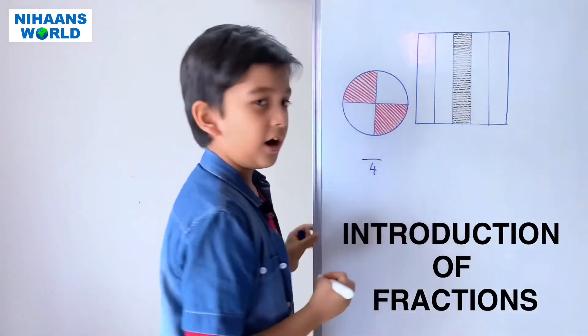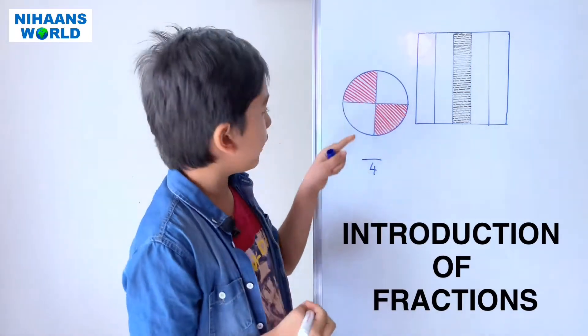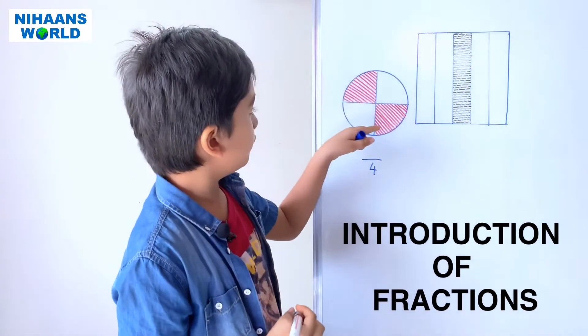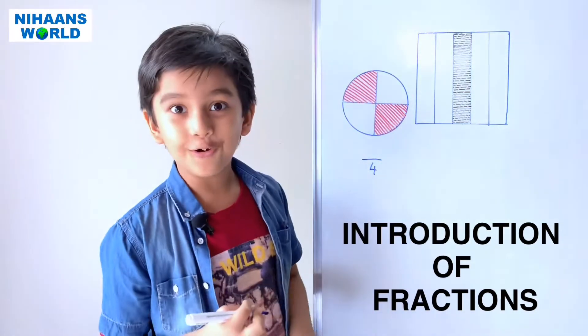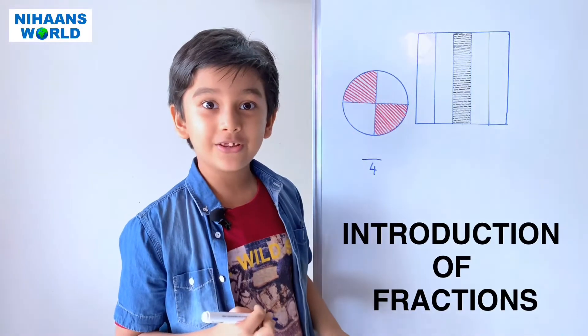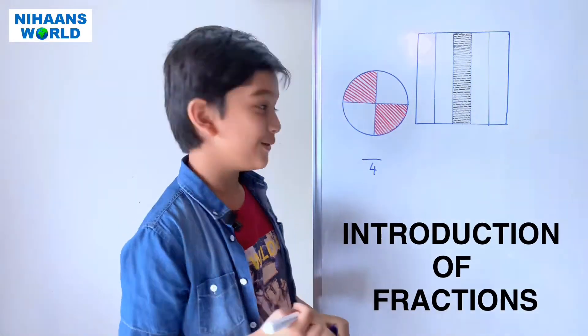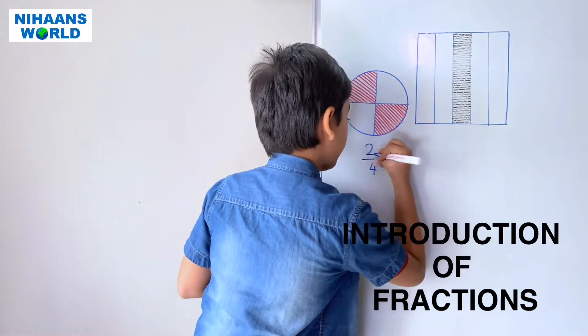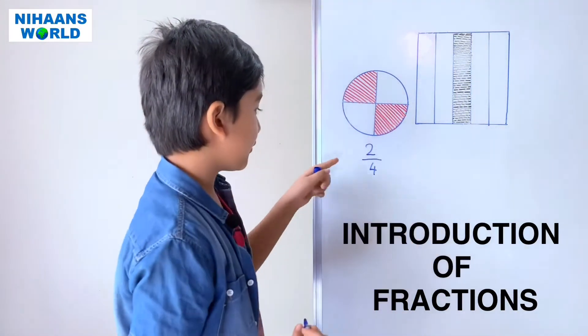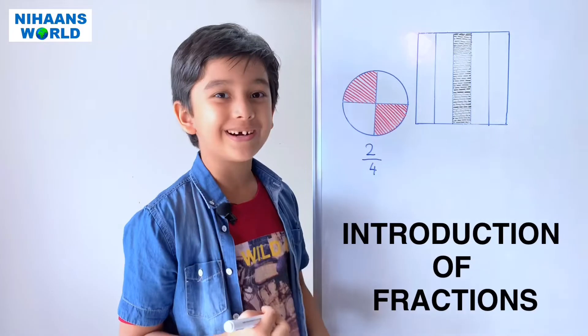And how many are shaded? One, two. So the numerator will be two. So the answer is two by four.